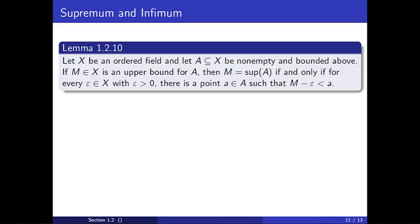We'll end our introduction to the supremum by previewing Lemma 1.2.10. Let X be an ordered field and let capital A be a non-empty subset of X which is bounded above. If M in X is an upper bound for A, then M is the supremum of A if and only if for every epsilon greater than 0, there is a point little a in A such that M minus epsilon is less than a.